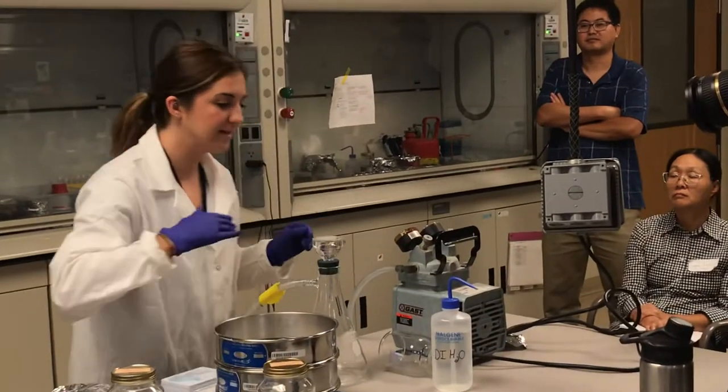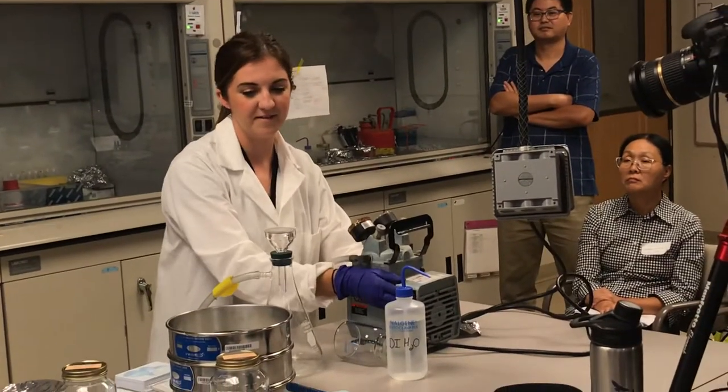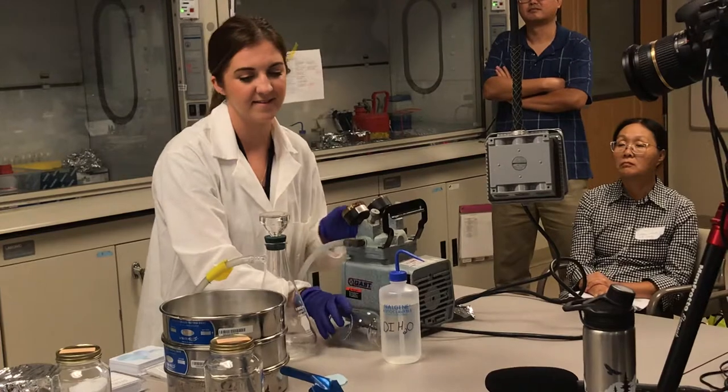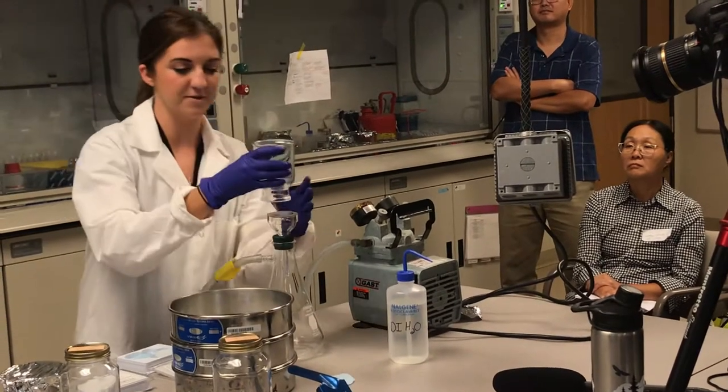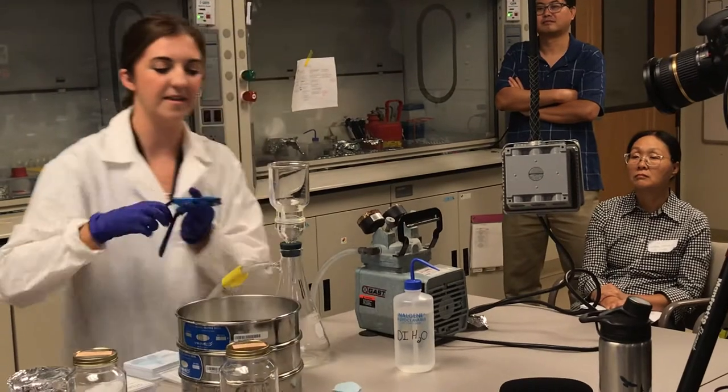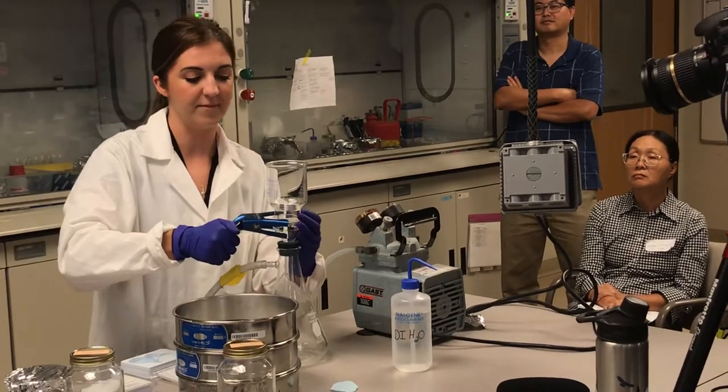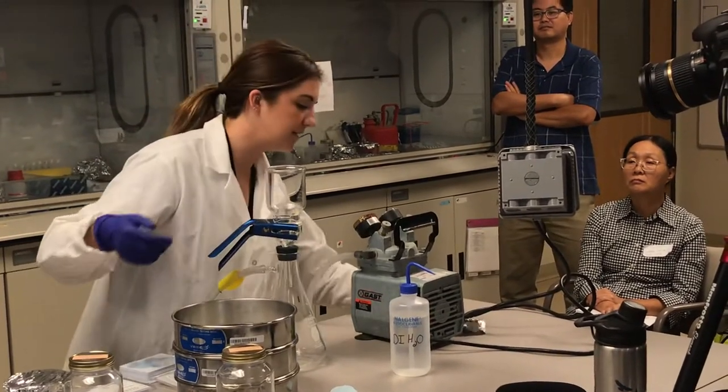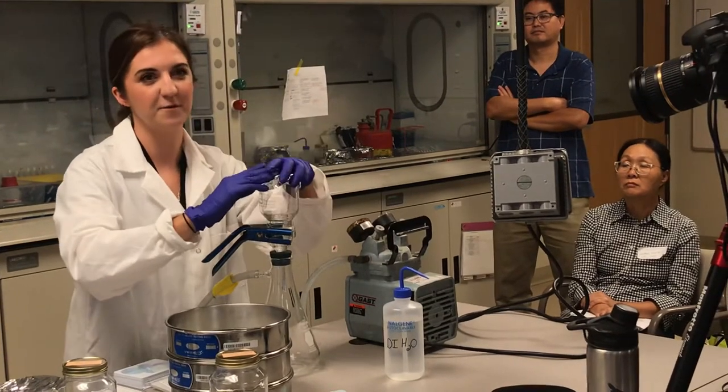To make sure that it's stuck flat to the filter, I would turn it on really quickly just to flatten it. And then you put your filtration flask on top and then you secure that with the clamp. And I would cover this when I end up using it to make sure nothing's falling on the filter. So then you're ready to process your sample.